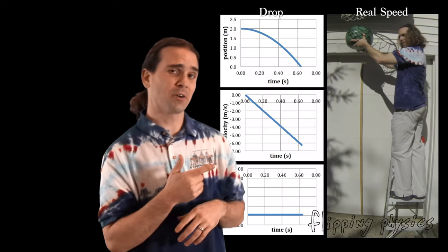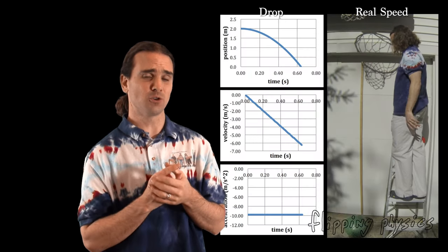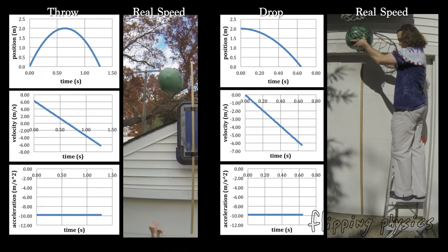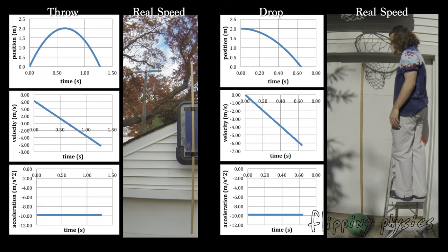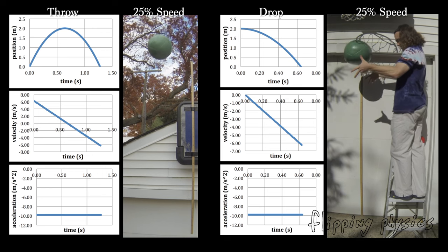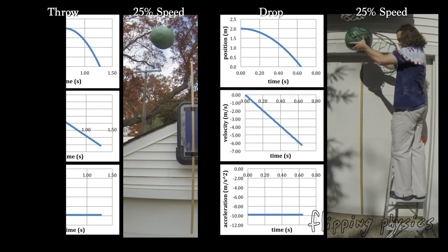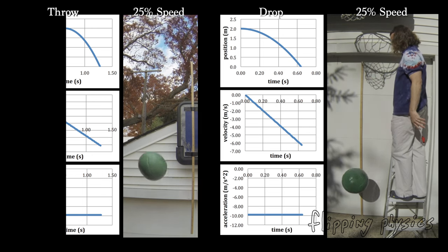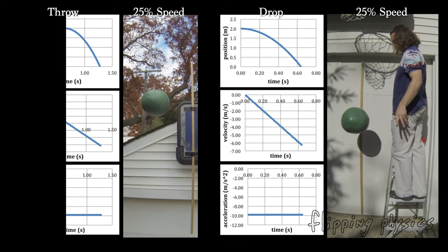Previously we determined these three graphs for the drop of the medicine ball from a height of 2.0 meters, and we determined these three graphs for throwing a medicine ball upward to a height of 2.0 meters and catching it again at the same height. The key here was that the second half of the throw graphs, or when the ball is moving downward, is exactly the same as the graphs for dropping the ball.